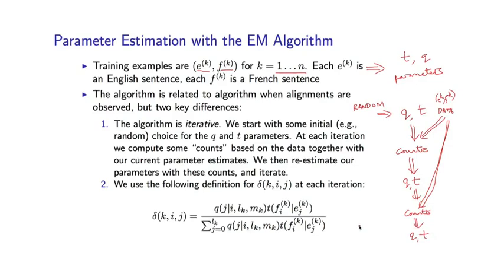It's typical with these kind of models to run for maybe, I don't know, 10 to 20 iterations. It's fairly common for these IBM models. Okay. So that's the basic idea. Random initialization. And then we recalculate the Q and T parameters at each step going through this process.